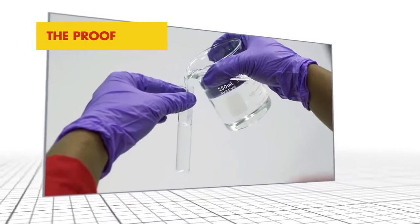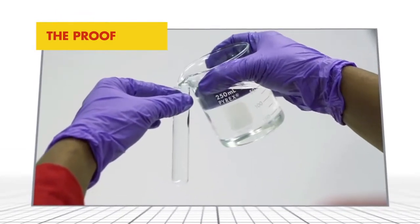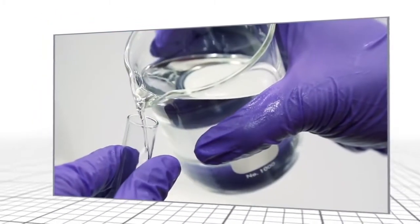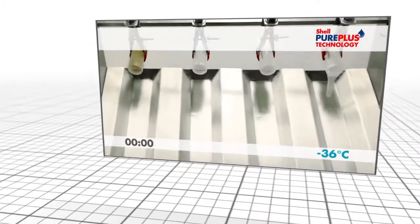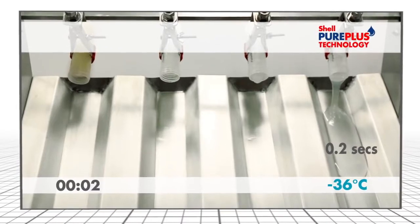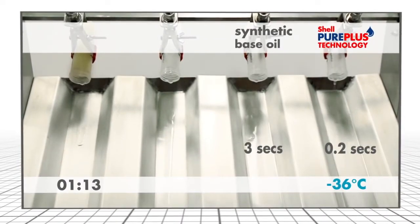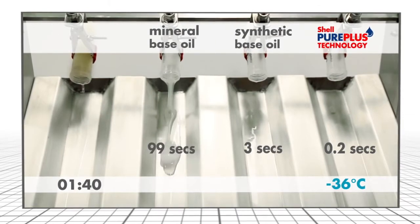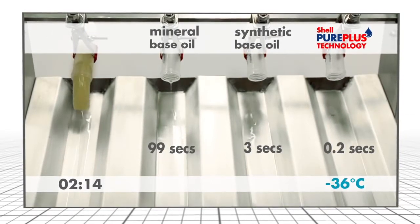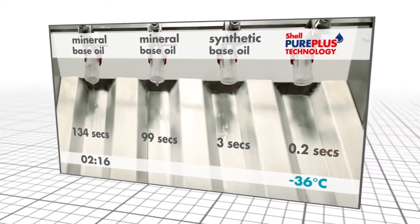Base oils created with Shell PurePlus technology have key performance advantages over those derived from crude oil. These base oils have been cooled to minus 36 degrees centigrade to assess performance at extreme low temperatures. The PurePlus technology base oil clearly demonstrates faster oil flow.